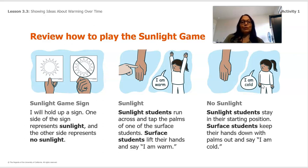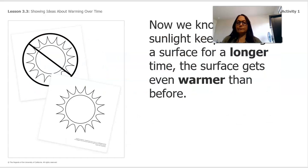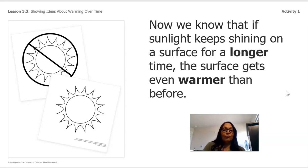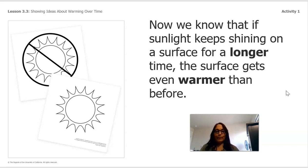That's how we play the game. Afterwards you can show someone — ask them to be sunlight, then you say 'I am warm,' and then be no sunlight and put your hands to the side and say 'I am cold.' So now we know that if sunlight keeps shining on a surface for a longer time, the surface gets even warmer than before.